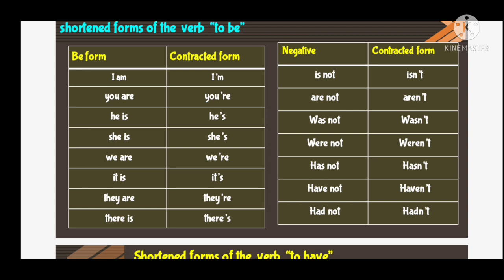The next is second person: 'you'. 'You are' — its contracted form is 'you're', that means you apostrophe r-e. The third person: 'he', 'she', 'it'. 'He is' becomes the contracted form 'he's'. The short form of 'she is' is 'she's' — she apostrophe s. 'We are' — the contracted form is 'we're', we apostrophe r-e.